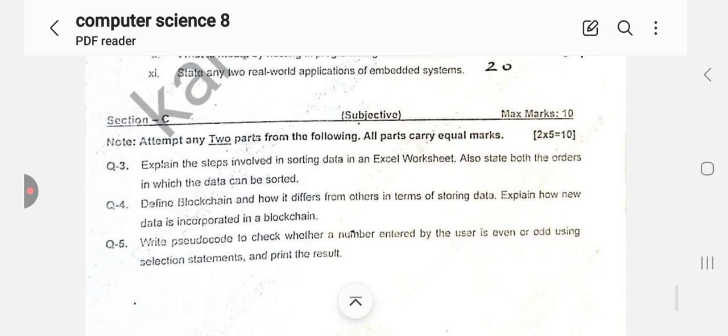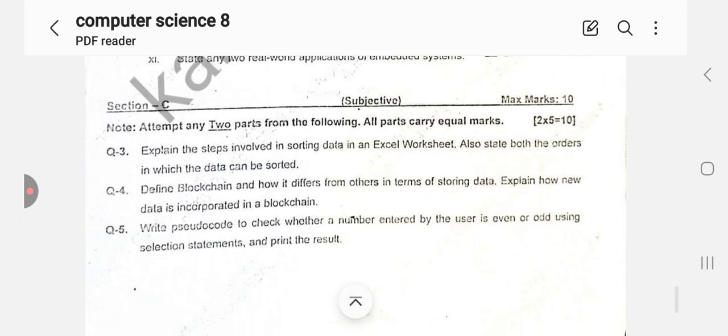Then you have section C subjective. In section C you have subjective questions. First question is related to worksheet and each question is 5 marks, so these two questions total 10 marks. In this you also state both orders in which the data can be sorted. Then there's a blockchain question and also answer question number 5. So you have 3 questions given.